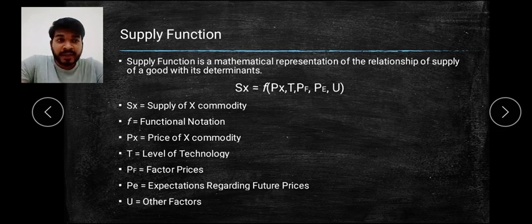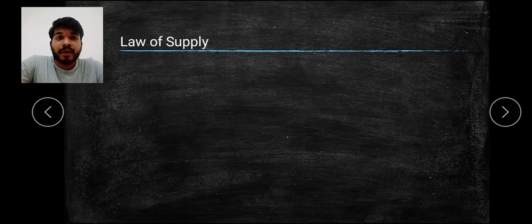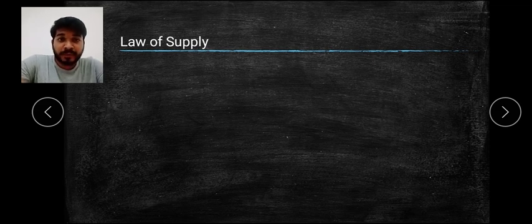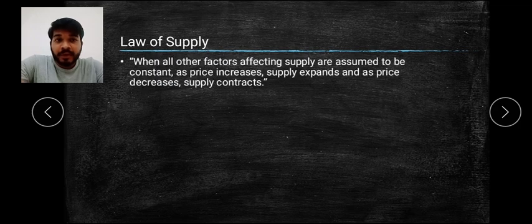That is just a mathematical representation or expression of the factors affecting supply of a particular good. Now let's go with the next topic, that is, Law of Supply. What is Law of Supply? In the beginning of the chapter we told you it is a similar concept. You have already studied Law of Demand — same way, your Law of Supply will be there, but the concept is different.